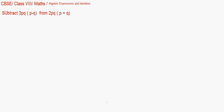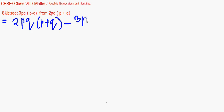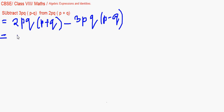I'll write it accordingly. Our first expression will be 2pq(p plus q) minus 3pq(p minus q). Let us now remove the brackets. We learned in the previous session how we multiply and remove the bracket with monomial and a binomial. We'll multiply 2pq with p first. That will give me 2p²q plus 2pq².